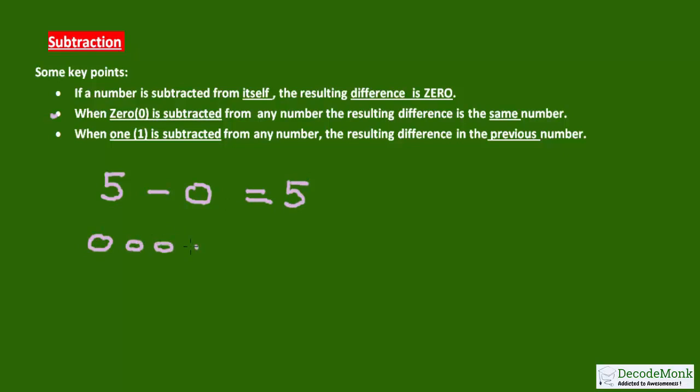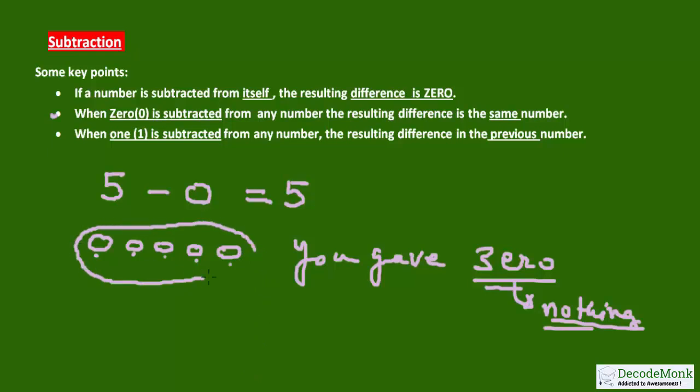We have got 5 oranges: 1, 2, 3, 4, 5. And out of that you gave 0. 0 means nothing—you became selfish and you gave nothing or no oranges to your friend. So if you do not give anything, obviously you will be left with the same number of oranges. So 5 minus 0 is 5.